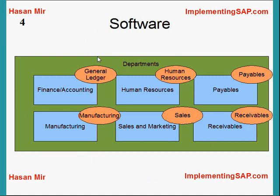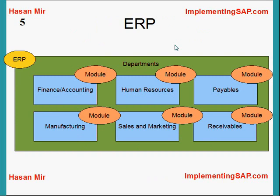Each department would be using some kind of software to help run day-to-day business, and they can buy software from any vendor. These softwares could be really independent from one another — for example, the finance department using one software and the human resources department using some other software from another vendor. This is where SAP comes into the picture.